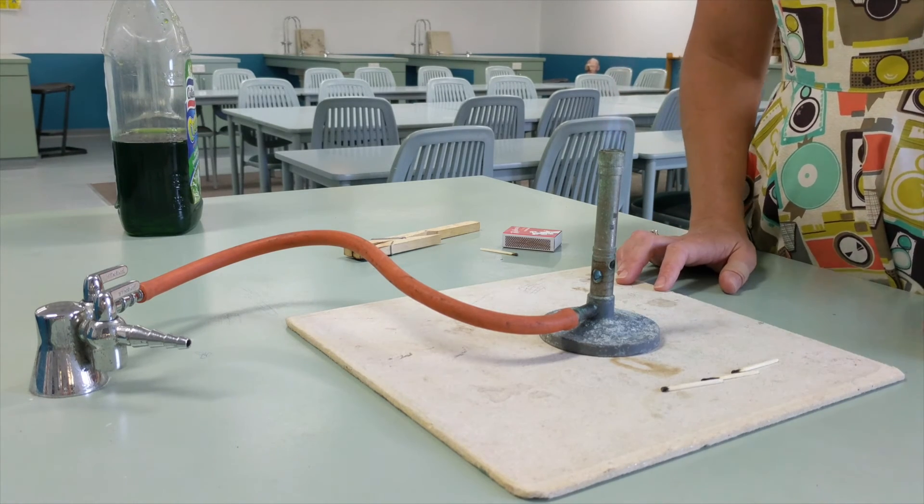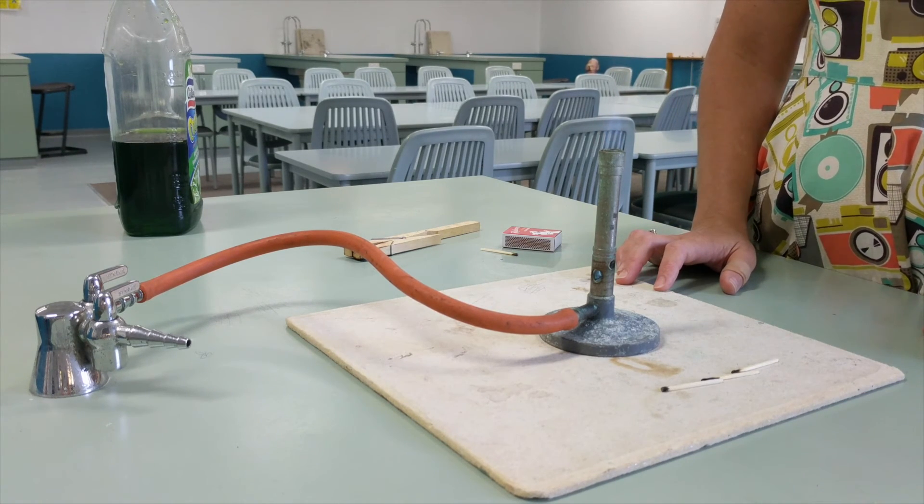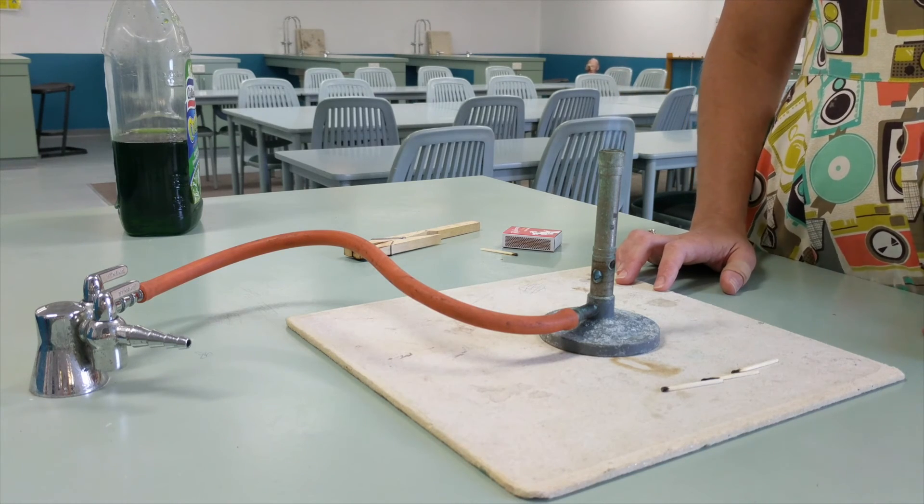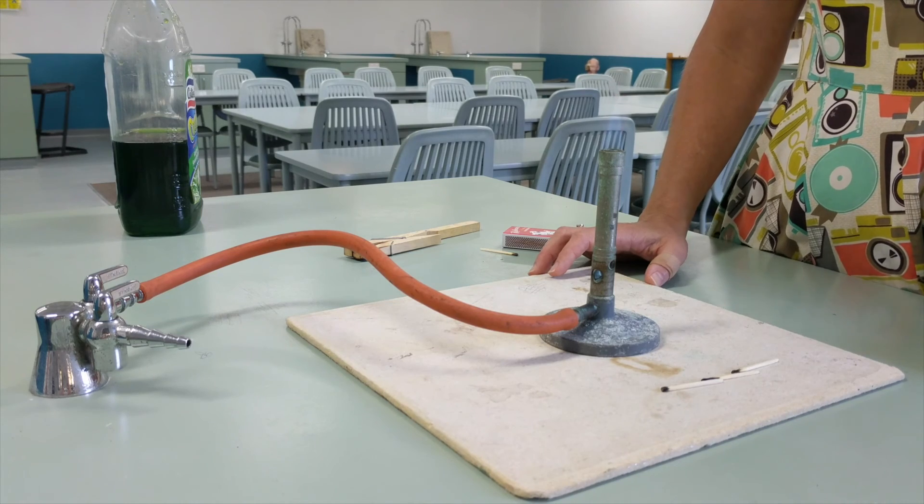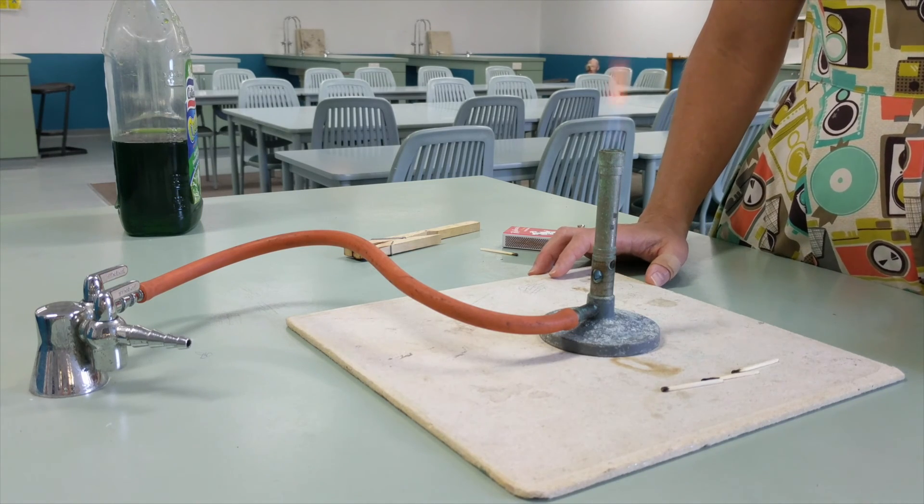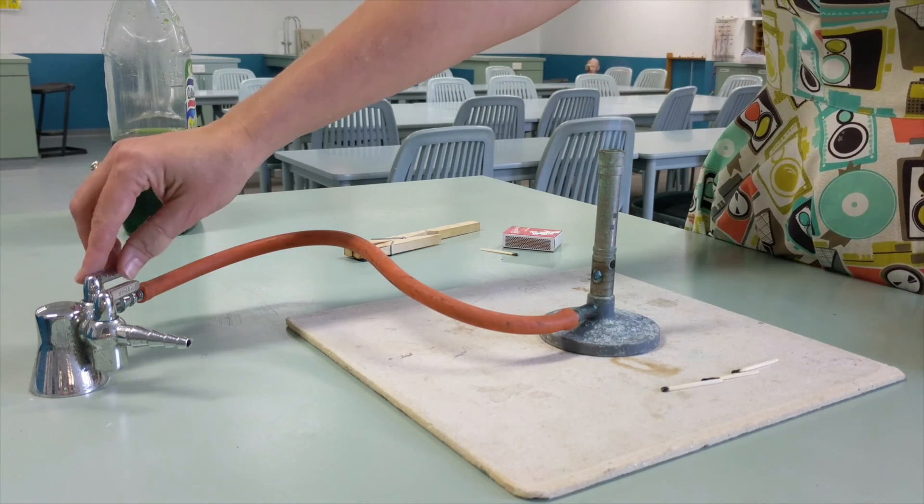When it's time to turn the Bunsen off, don't blow it out. Don't blow the flame out because then you might accidentally leave the gas on, and dangerous gas would start to build up in the room. In order to turn the Bunsen off, all you do is simply turn it off at the gas tap.